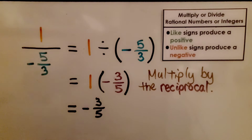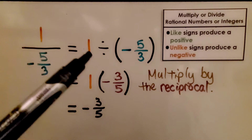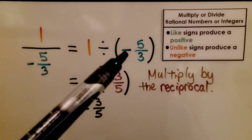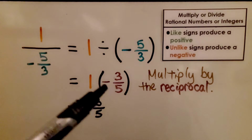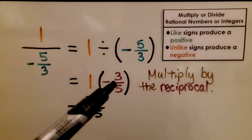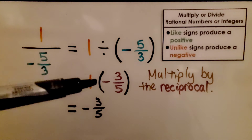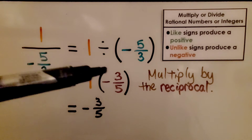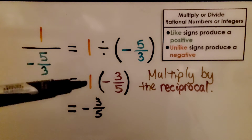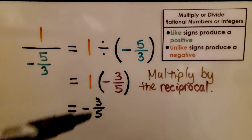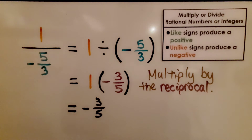Here we have 1 divided by negative 5/3. We can write it as 1 divided by negative 5/3. We multiply by the reciprocal, negative 3/5. 1 times negative 3/5 is negative 3/5 — that's the identity property: 1 times any number is going to be that number; it keeps its identity.